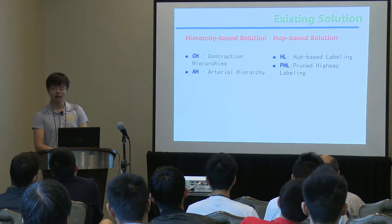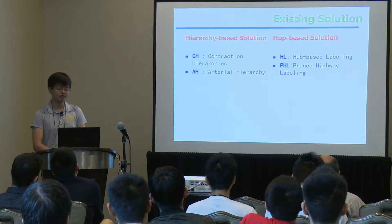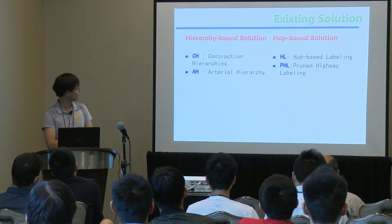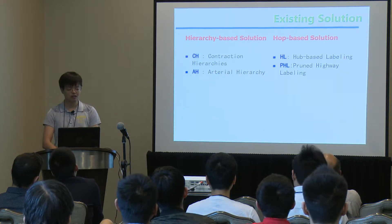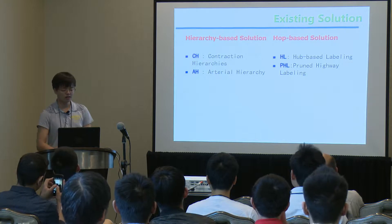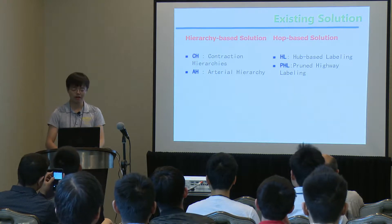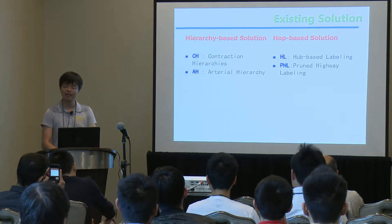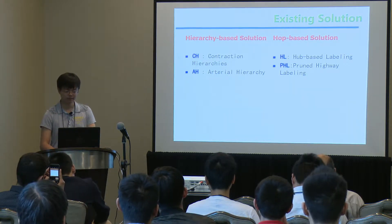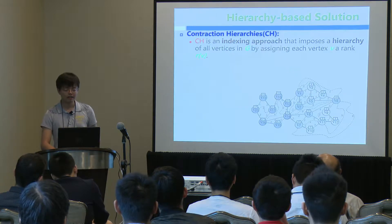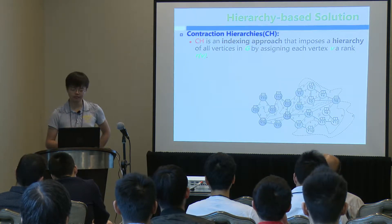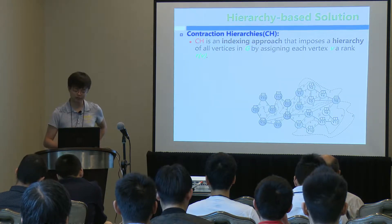The state-of-the-art algorithms include four kinds: contraction hierarchy, arterial hierarchy, hop-based labeling, and pruning highway labeling. Today I will focus on contraction hierarchy and pruning labeling.